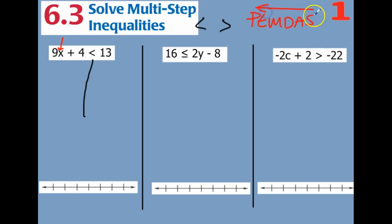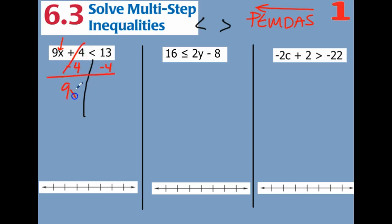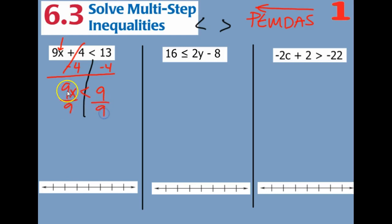So we get rid of our addition and subtraction first. I'm going to subtract 4 on both sides. 4 minus 4 goes away and we have 9x is less than. And then 13 minus 4 is also 9. Then divide by 9 on both sides to get rid of the multiply by 9.